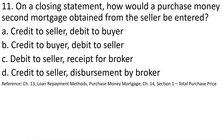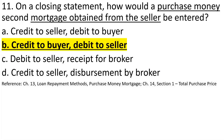Number eleven: On a closing statement, a purchase money second mortgage obtained from the seller — meaning the seller is holding the mortgage — would be entered as a credit to the buyer and a debit to the seller. This applies when the buyer cannot qualify for a full loan and the seller agrees to hold the remaining balance. It's a credit to the buyer because they owe that amount, and a debit to the seller because the seller is loaning that money.